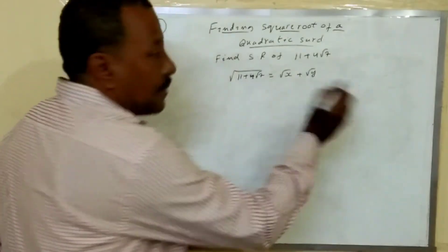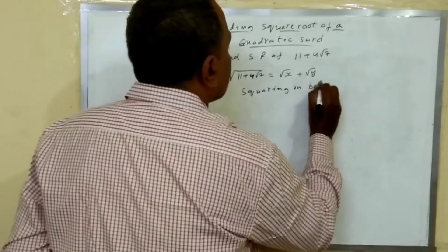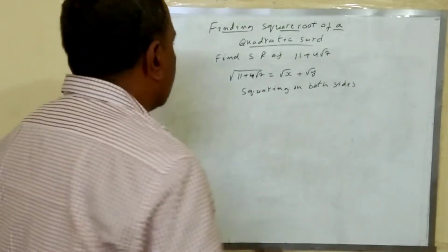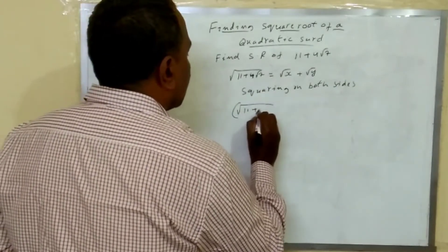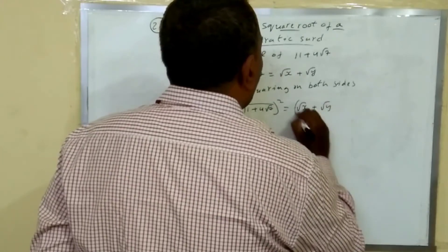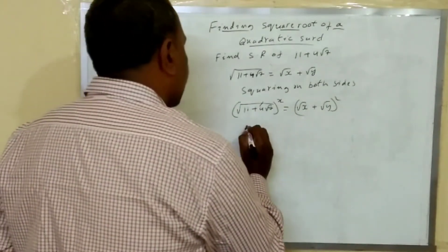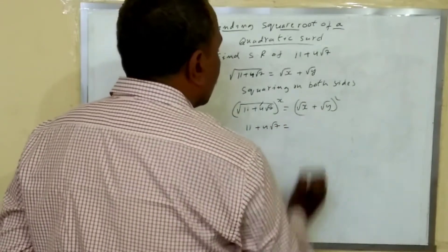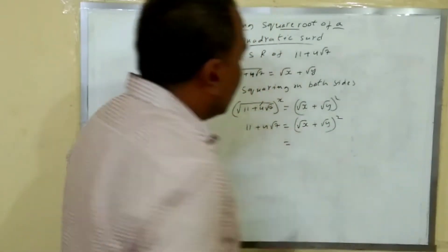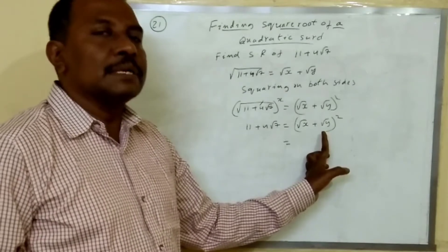The first step is squaring on both sides — squaring LHS as well as RHS. So, square root of 11 plus 4 root 7 squared equals root x plus root y squared. Square and root get cancelled, so that becomes 11 plus 4 root 7 equals root x plus root y whole square. This is in the form of a plus b whole square. The expanded form of a plus b whole square is a squared plus b squared plus 2ab.